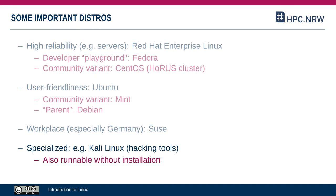There are various other Linux distributions geared towards specific purposes. One example is Kali Linux, which is geared towards hackers and security testers. One of its features is that it can run without being installed on the computer — you simply put in a USB stick and boot Kali Linux directly from it, and it only lives in the RAM of the computer. Kali Linux is specialized for this because it is specialized for security testing.